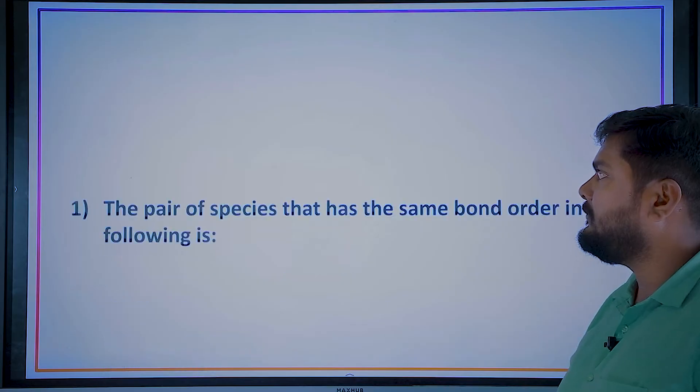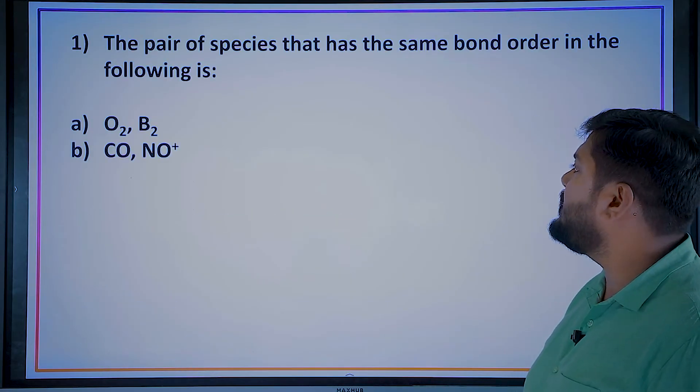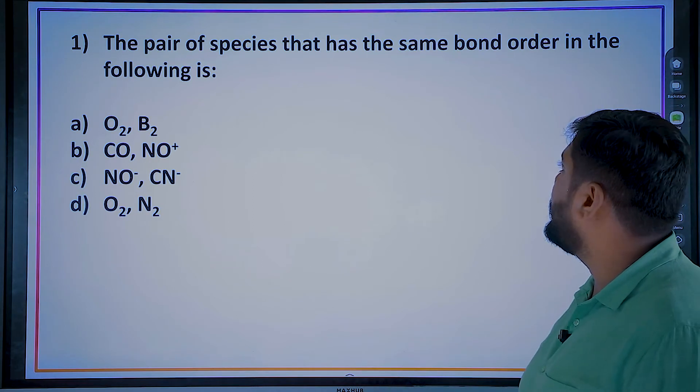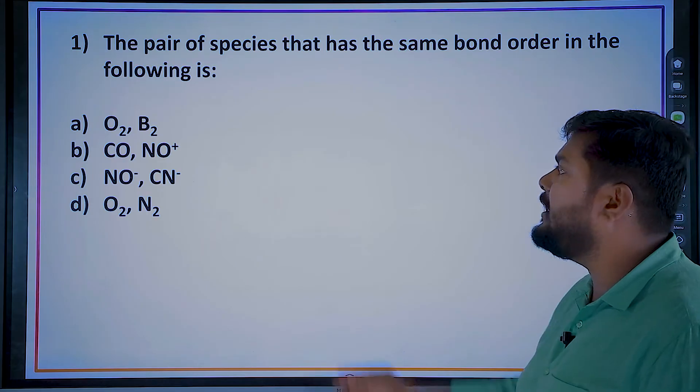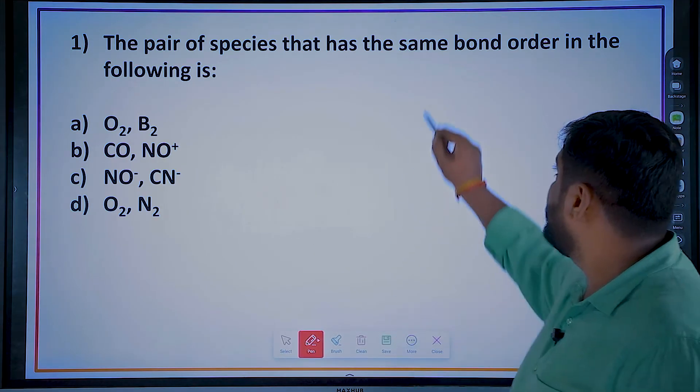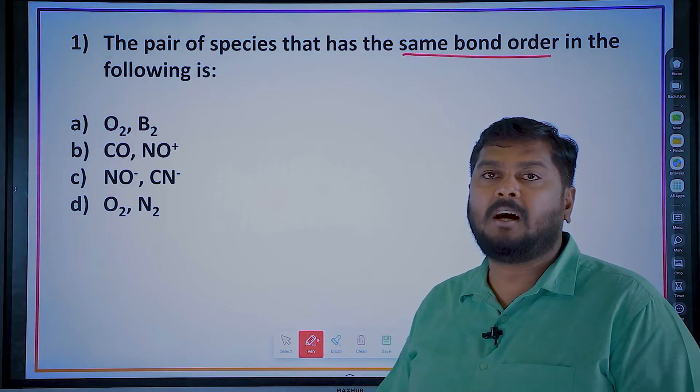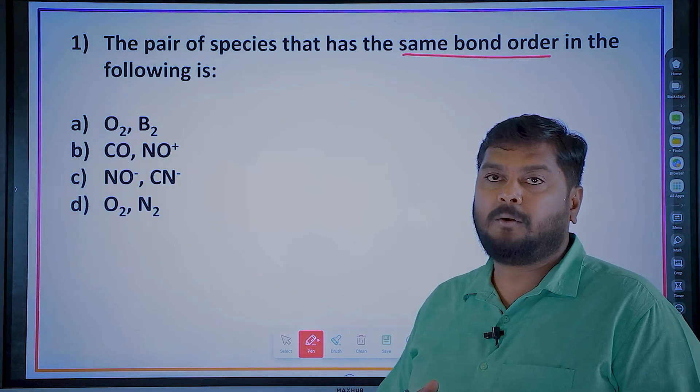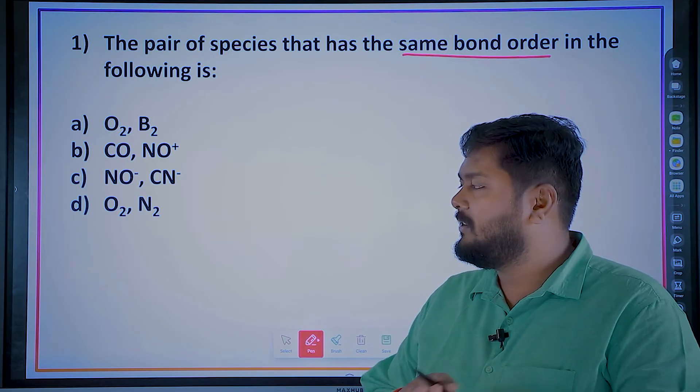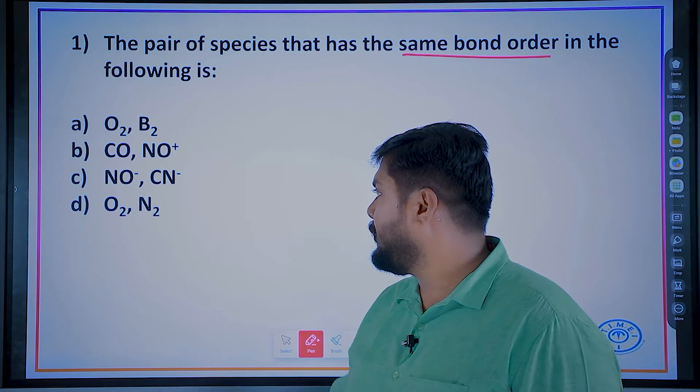Moving to the question. See, for this question, which pair of species will have same bond order? Pair of species that has same bond order in the following. So which has the same bond order? Just predict the number of electrons.